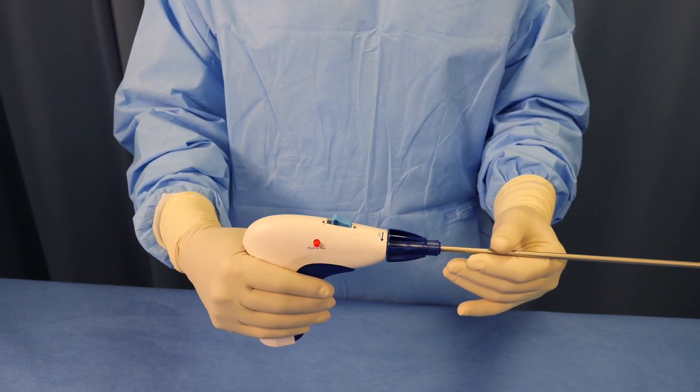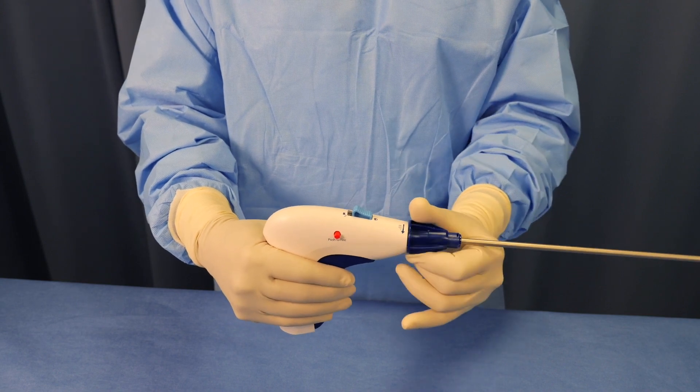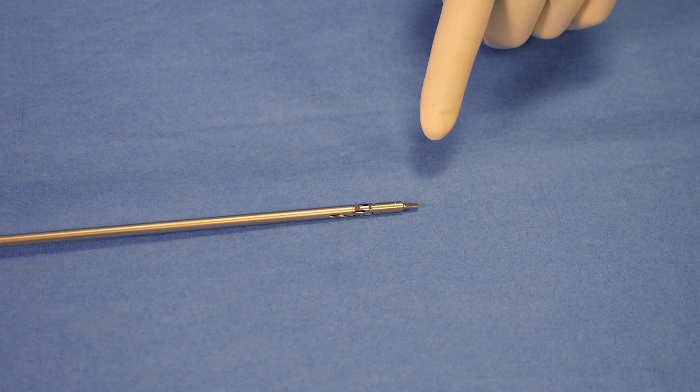The articulation knob allows the device to be articulated or straightened with a single turn. The pin is inserted into the proximal end of the reload to load the device.